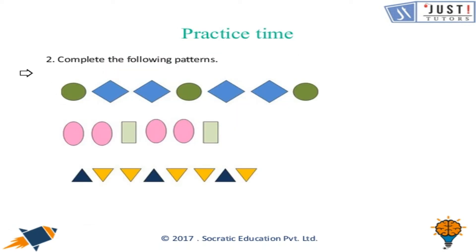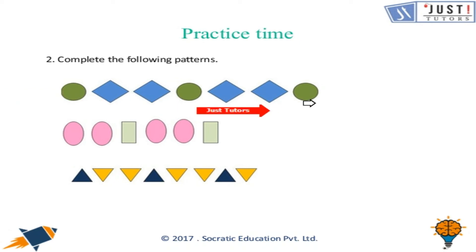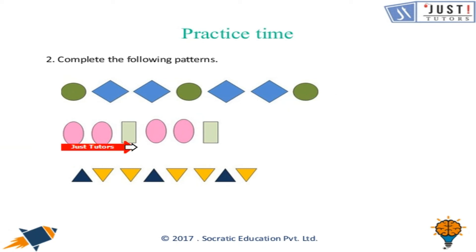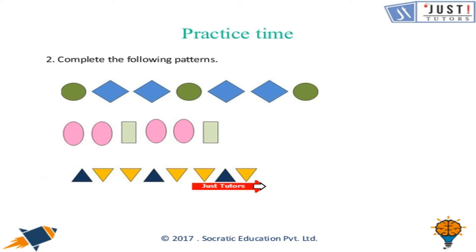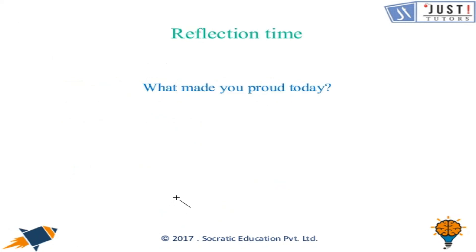Complete the following patterns: a circle then two squares, then circle then two squares. A rectangle then two ovals, then rectangle then two ovals. A triangle then two inverted triangles, then triangle then two inverted triangles — so the next shape will be two inverted triangles.